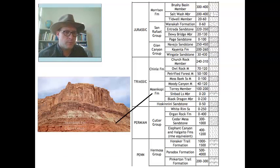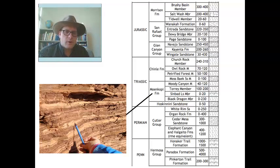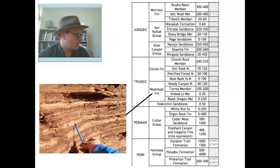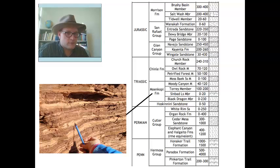On top of the Cutler Group we have the Moenkopi Formation, which is easily recognized because of its very thin lamina structures. It probably represents tidal facies and is broken out into various members. Down in the Paradox Basin, there are some limestone units — carbonate deposits that developed, including the Sinbad Limestone within the Moenkopi. So near the ocean you get some carbonate-type deposits, as well as muds and tidal-type facies and even nice ripple marks within the Moenkopi.